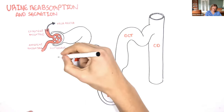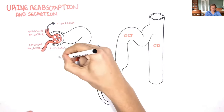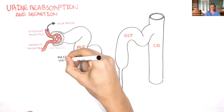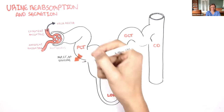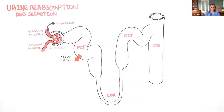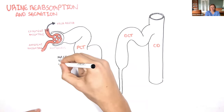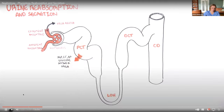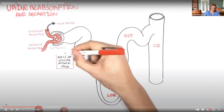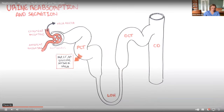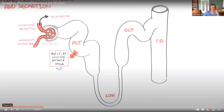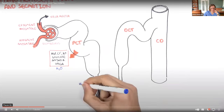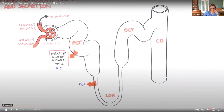[Video] In the proximal convoluted tubule, you get reabsorption of sodium, chloride, potassium, glucose, amino acids, urea, bicarbonate, and water. In the descending limb of the loop of Henle, water reabsorption takes place.